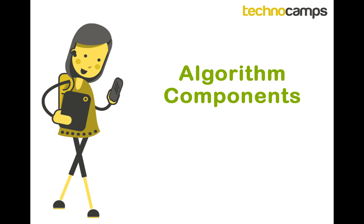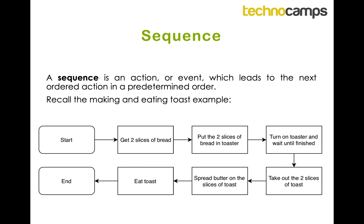There are a few components of an algorithm that we use in every single algorithm one way or another. The first is sequence. A sequence is an action or event which leads to the next ordered action in a predetermined order. For example with the toast: you start, get two slices of bread, and all these steps must be in a particular sequence. You cannot put the bread in the toaster without first getting the bread and a toaster. Following this step by step, you should be able to make a toast.